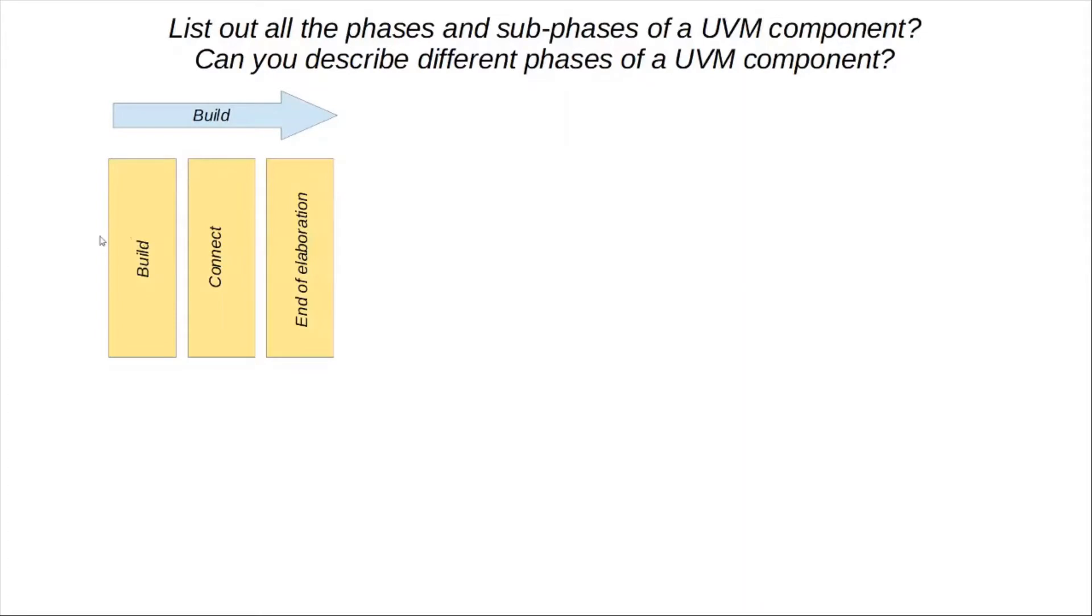The main function of the build phases is to instantiate, configure, and connect UVM components across the test bench. The next phase is called the start of simulation. This again is another function which executes in a bottom-up manner. This gets executed just before the simulation time starts to tick. It's mainly used when we need to print out test bench configs, topology, and start of simulation messages and other such displays of information.